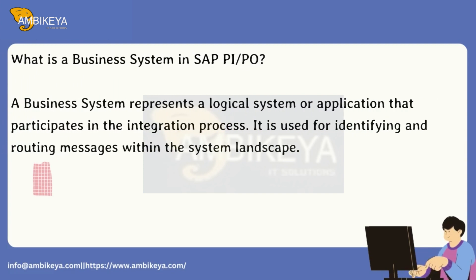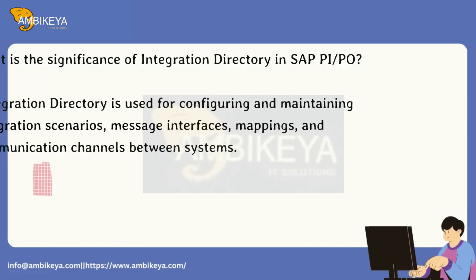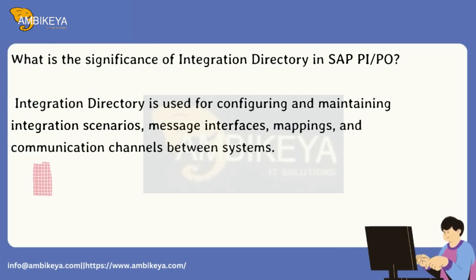What is a business system in SAP PI/PO? A business system represents a logical system or application that participates in the integration process. It is used for identifying and routing messages within the system landscape. What is the significance of the Integration Directory in SAP PI/PO? The Integration Directory is used for configuring and maintaining integration scenarios, message interfaces, mappings, and communication channels between systems.